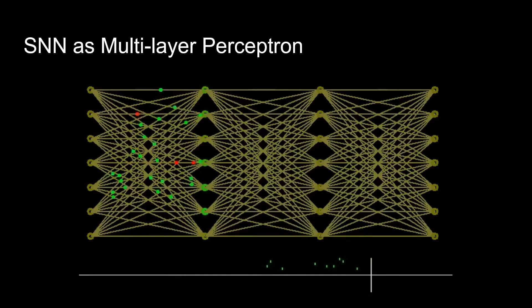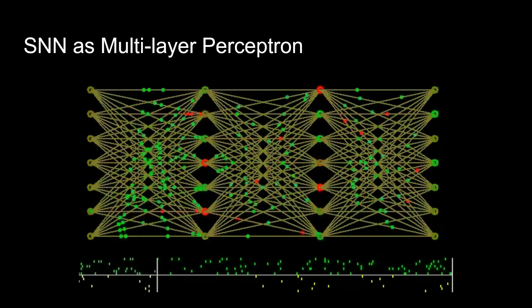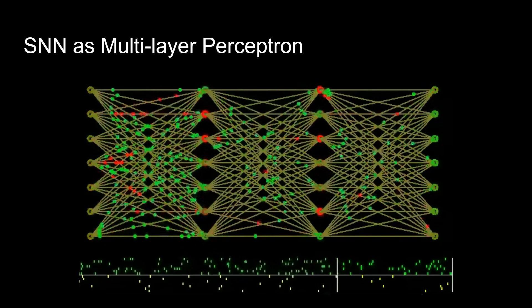This animation shows a multilayer perceptron of spiking neurons. Input spikes from the left are asynchronously processed by the first layer of spiking neurons. They themselves send out spikes to the next layer whenever their thresholds are reached. Notice how, unlike ANNs, spiking neurons exchange information asynchronously and parallel in space and time. This means that all layers simultaneously process information without incurring latency.